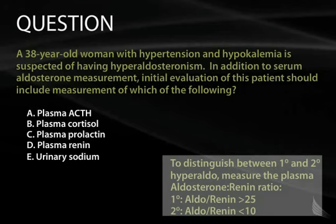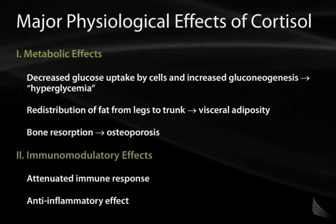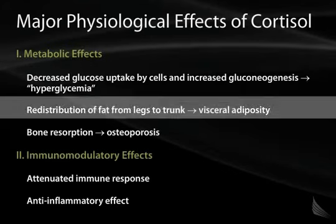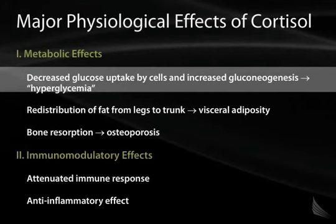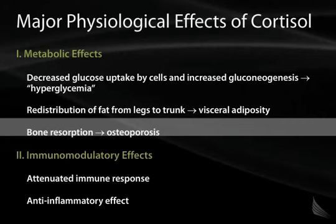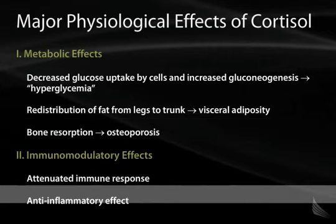Now let's switch to the HPA axis, primarily driven by cortisol. The physiological effects of cortisol can be metabolic or immunomodulatory. Metabolic effects include decreased glucose uptake leading to diabetes, redistribution of fat from legs to trunk causing central adiposity, and osteoporosis due to increased bone resorption. Cortisol also has potent anti-inflammatory effects, attenuating immune responses.